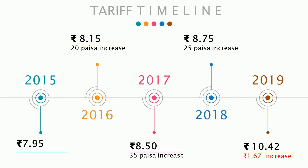Over the years there has been a drastic increase in power tariff. In 2015, the price per unit for commercial buildings was ₹7 rupees 95 paise. But in just 5 years it increased to ₹8 rupees 75 paise. What is more alarming is the new proposed tariff by the electrical board is ₹10 rupees 42 paise, and prices will keep going up each year.